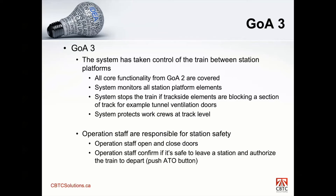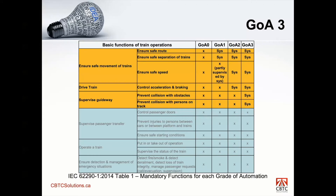There are still personnel on board the trains, but they're not called drivers anymore — they're called operation staff, and they're responsible for station safety. That's their main function. The operation staff open and close doors, determine if it's safe to leave a station, and authorize the train to depart — usually by pushing the ATO button. They're basically just opening and closing doors and making sure it's safe on the platform to depart. In a GOA 3 application, what they've introduced is supervised guideway, which is this third key functionality.